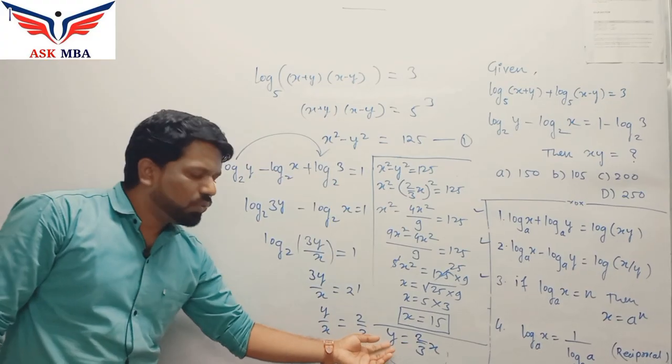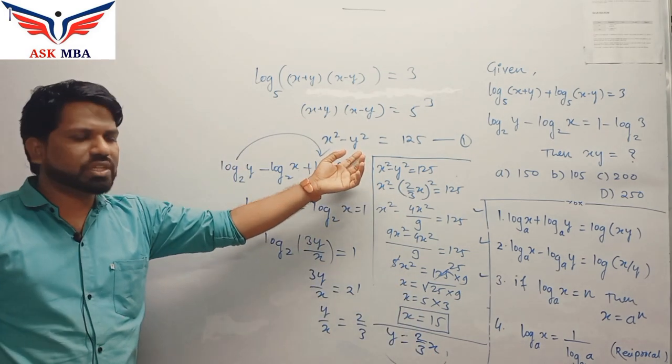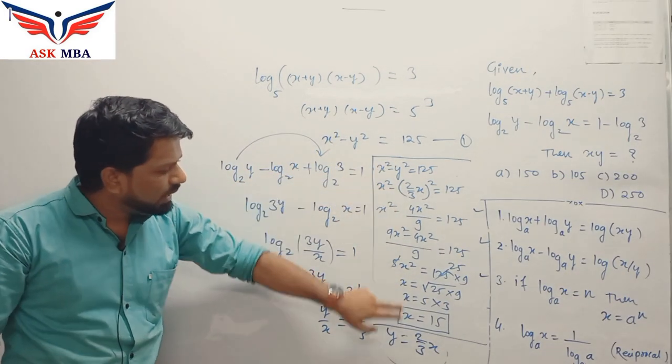So after using y equal to 2 by 3 of x in the first equation, just solve it. You will get x is equal to 15.